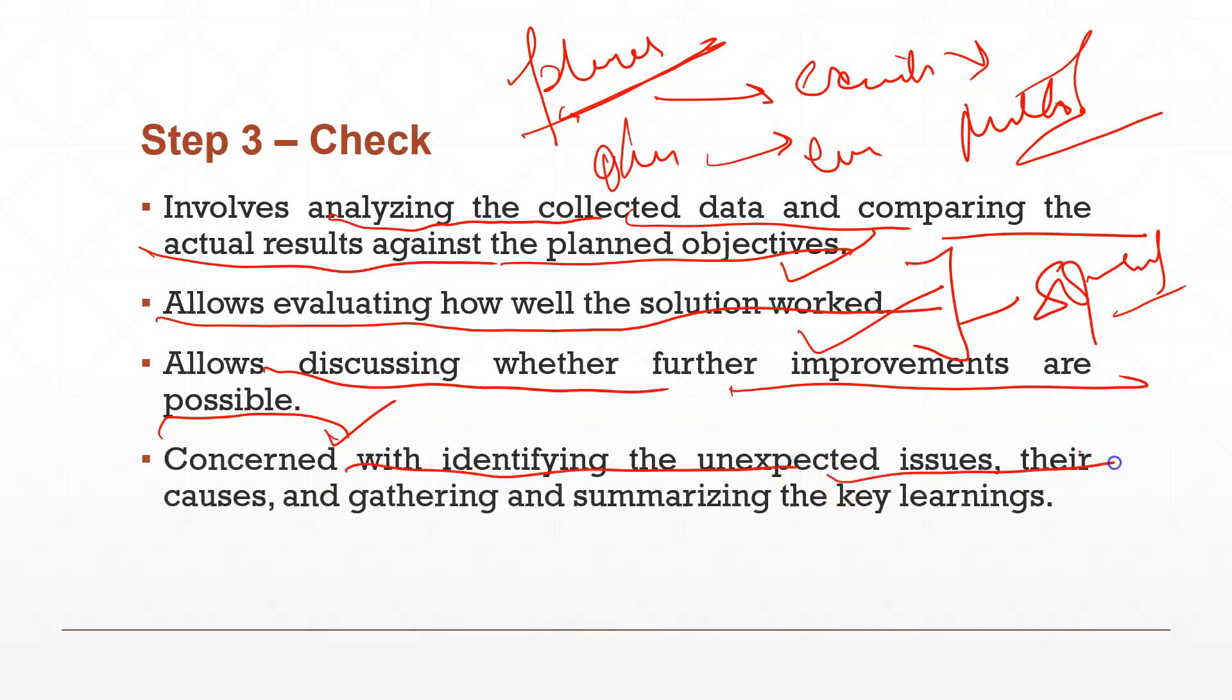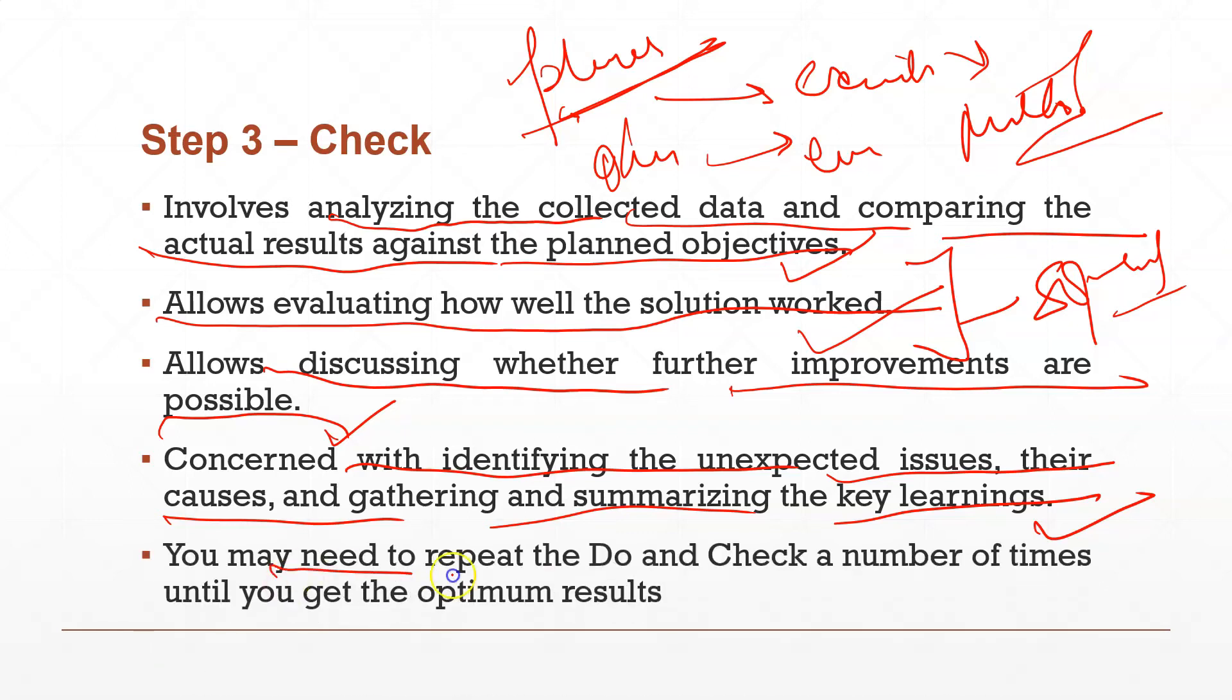It is concerned with identifying the unexpected issues, their causes, and gathering and summarizing the key learnings. There may be things that are unexpected. You didn't think it would happen like this, but it did. When you executed the process, you found some new errors, some new issues, so you will also collect that data and try to know why those issues came. You may need to repeat Do and Check a number of times until you get the optimum result. As I told you in the starting, you may need to repeat the processes. If what you executed worked, that's good. If it didn't work, after checking, you will repeat it again, and again, until everything becomes correct. You keep repeating it until all problems are solved.